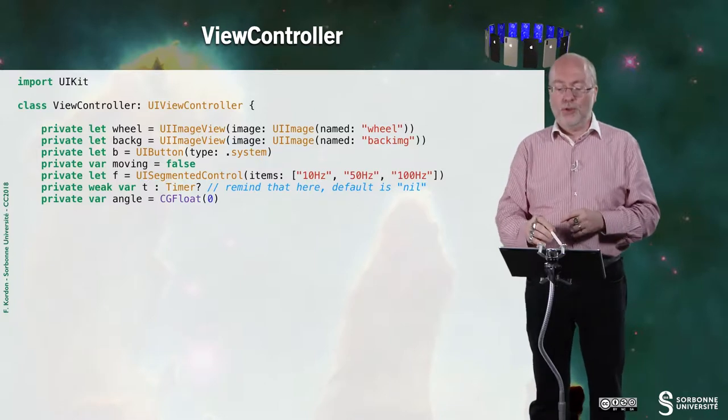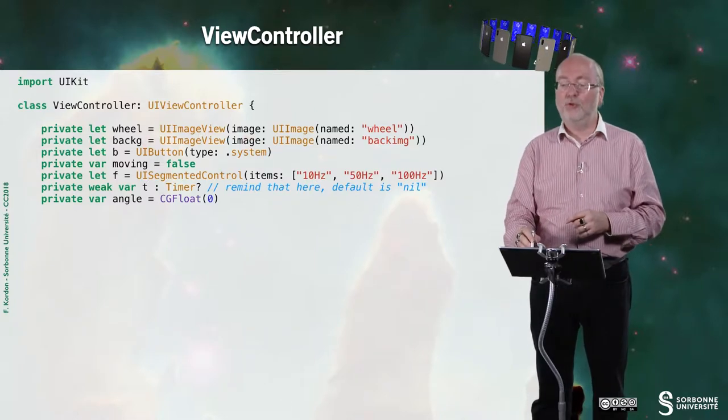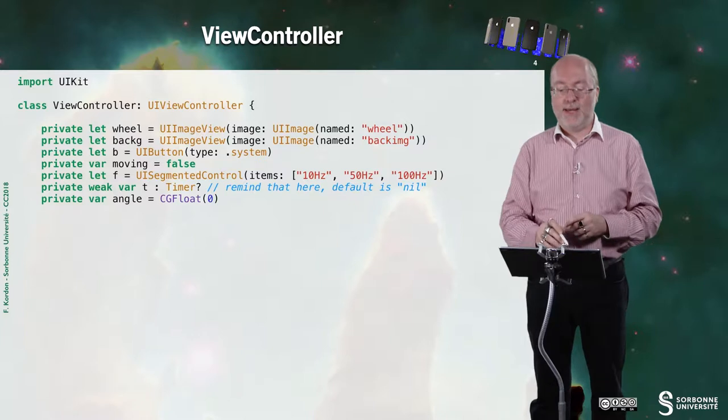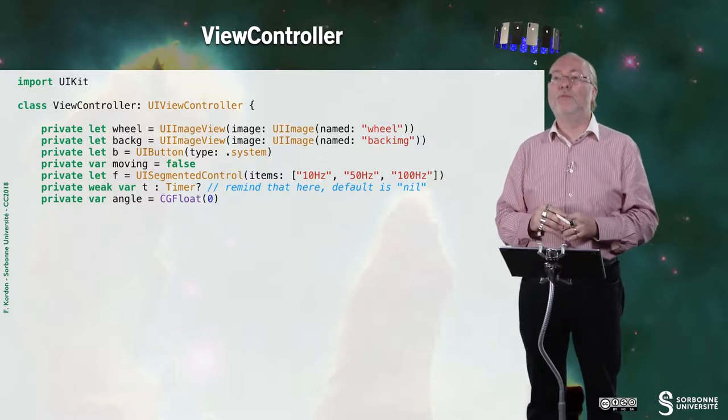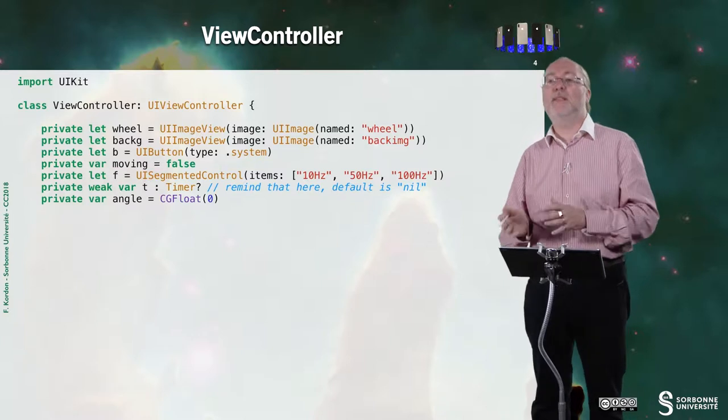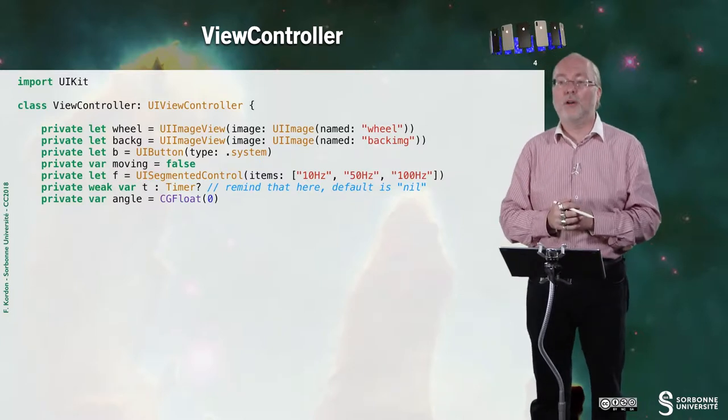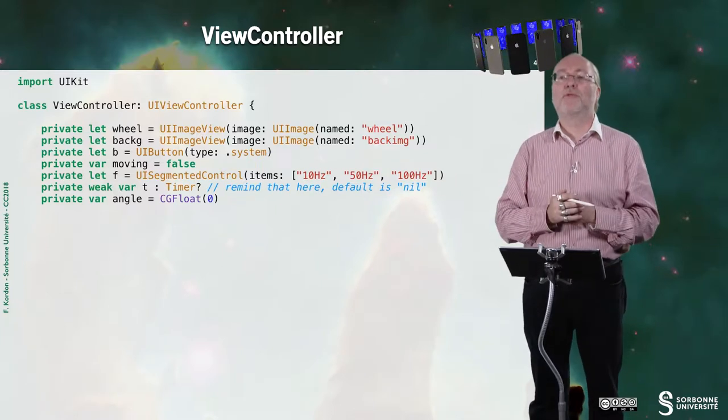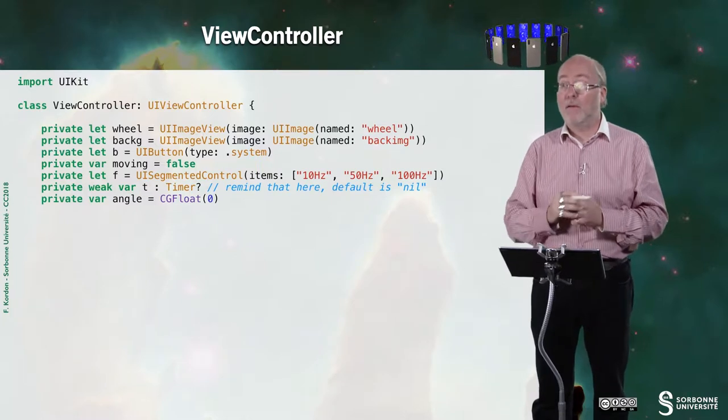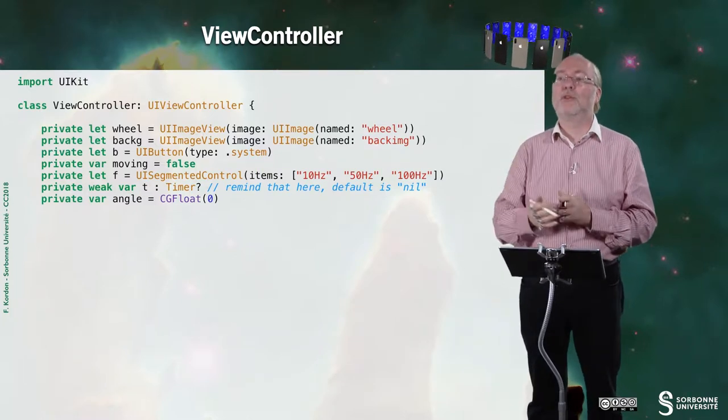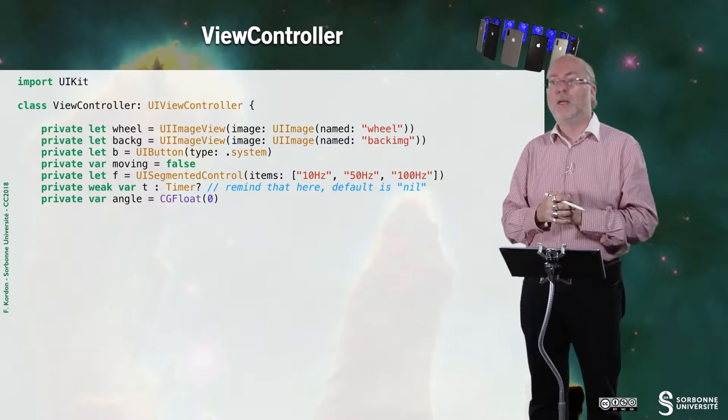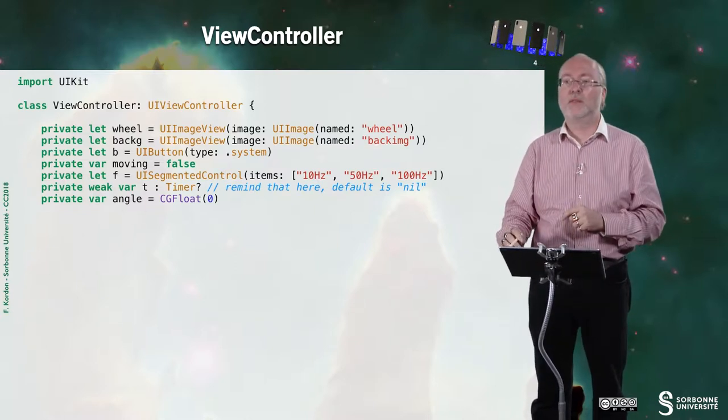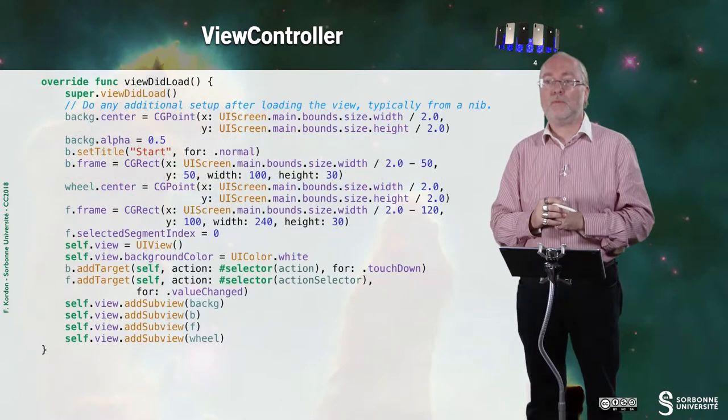First, you see that I have two image views, one for the background image and the second one for the wheel. I have a button to start and stop the rotation. I have a boolean that states if currently the wheel is moving or not. I have a segmented control to select various frequencies. I have a timer - it's weak because it can be set to null and can be released as soon as possible. And I have a global angle that is set to zero.